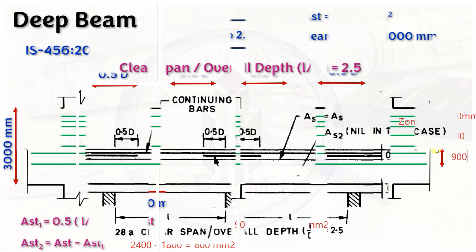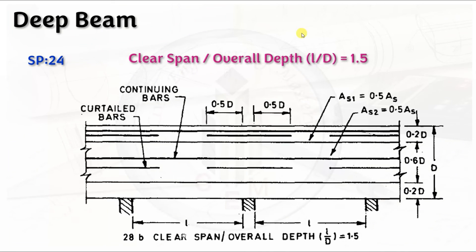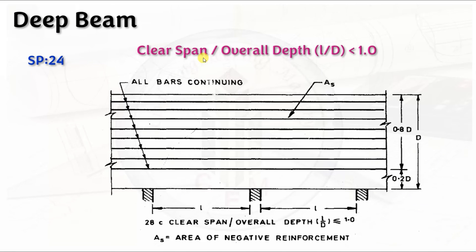Looking at SP 34 codal provisions: when clear span/overall depth = 2.5, As1 = As and As2 = nil (no As2 required). Zone 1 is 0.2d and Zone 2 is 0.6d (split 0.3d + 0.3d from mid-depth). When clear span/overall depth = 1.5, As1 = 0.5 × As and As2 = 0.5 × As1. When clear span/overall depth is less than 1, no such divisions are required — evenly distribute over 0.8d.